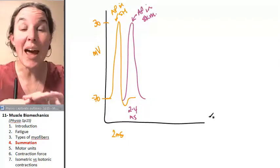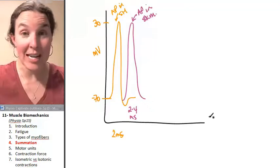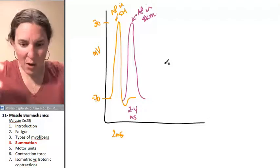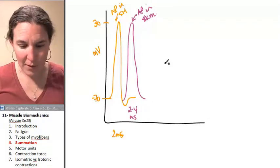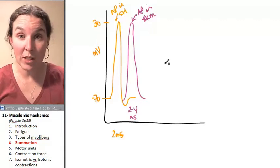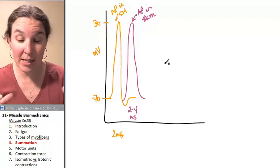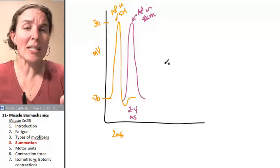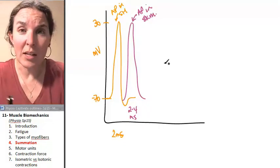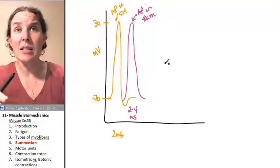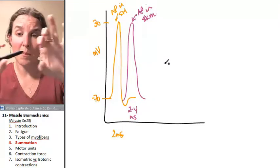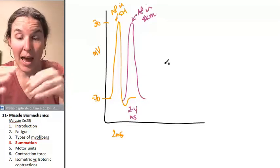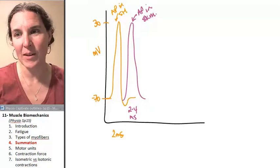Now we have an action potential that has traveled down the skeletal muscle fiber and it's gone down into my T-tubules, and now it's opening up the voltage-gated calcium channels in the sarcoplasmic reticulum. Are you following this? Now we dump calcium into the sarcoplasm. Now calcium diffuses over to the myofibrils and attaches to the myofilaments and causes the contraction to begin. How long did that take?